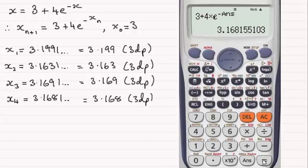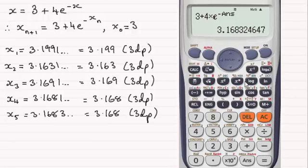equals again and we've got x₄: 3.1681, to 3dp it's 3.168, still not settled. Press equals again and we've now got x₅: 3.1683, it's 3.168 to 3 decimal places, but notice how it's a 3 here. Previously it was